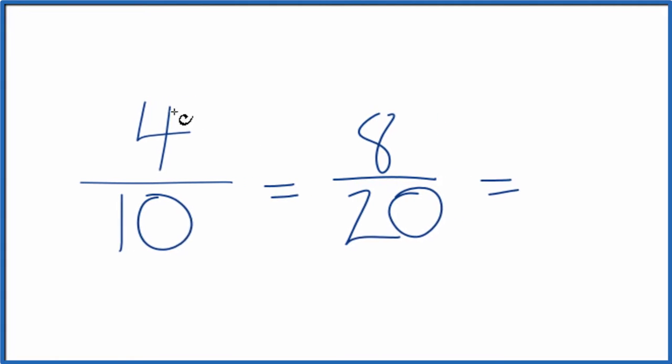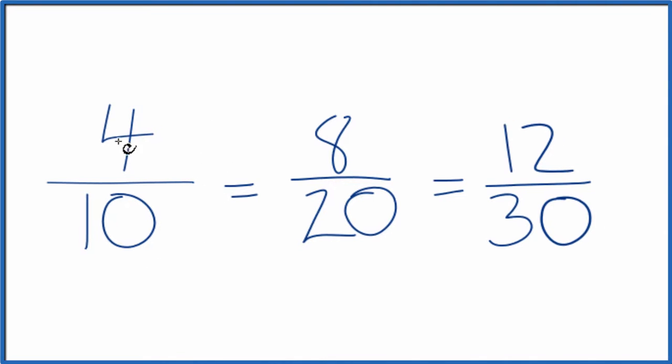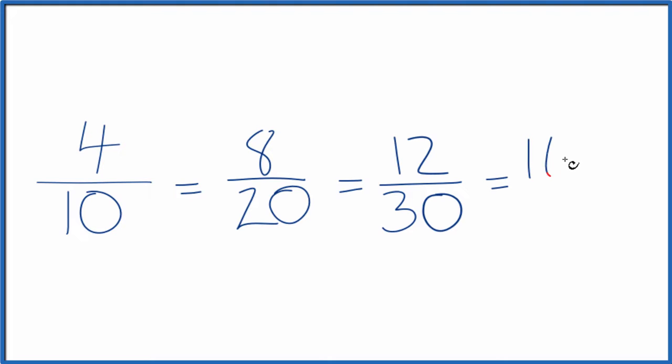We could also multiply the numerator and denominator by 3. 4 times 3 is 12, and then 10 times 3 is 30. That's another equivalent fraction for 4 tenths. We could also multiply by 4. 4 times 4 is 16. 10 times 4 is 40.